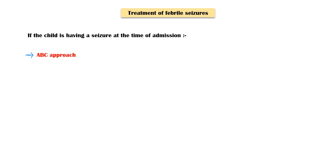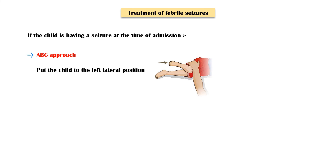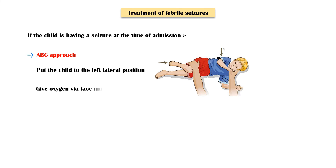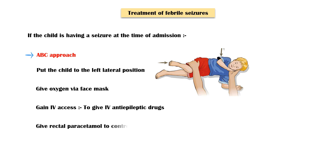Treatment of febrile seizures varies according to the child's presentation. If the child is having a seizure at the time of admission, airway, breathing, and circulation should be assessed. The child should then be placed into the left lateral position, oxygen given via face mask, intravenous access established to administer anti-epileptic medications, and rectal paracetamol given to control fever.